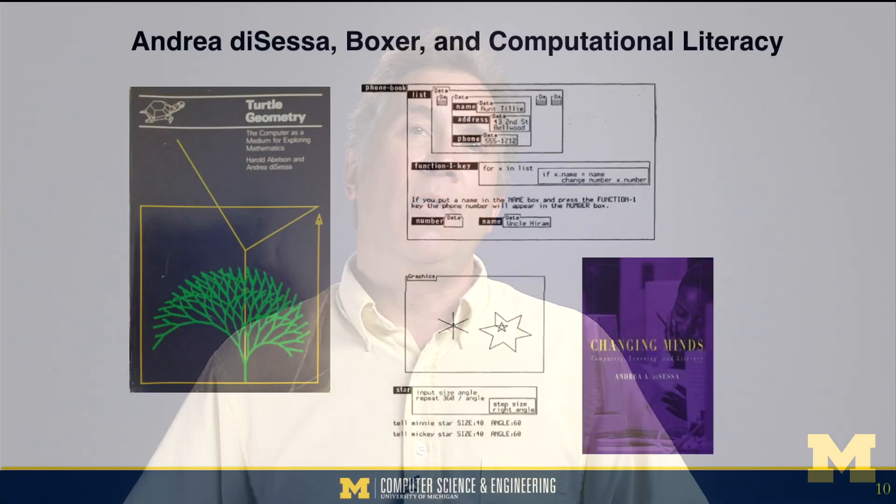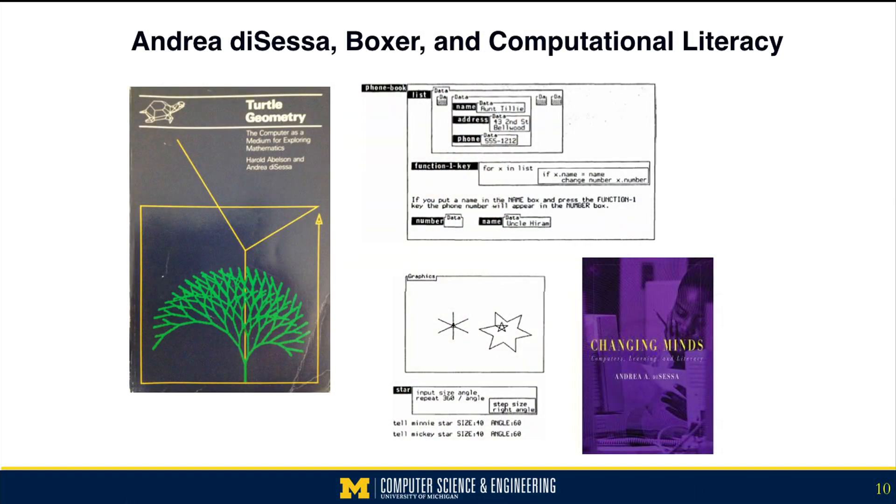He with Hal Abelson wrote the book Turtle Geometry about the very powerful kinds of ideas that you can explore with what we thought was a simple thing: Seymour's logo turtle. The images in the middle are from Boxer, the programming environment that diSessa and his students developed to answer the question: if you really wanted kids to engage with computational literacy, what should the environment look like?